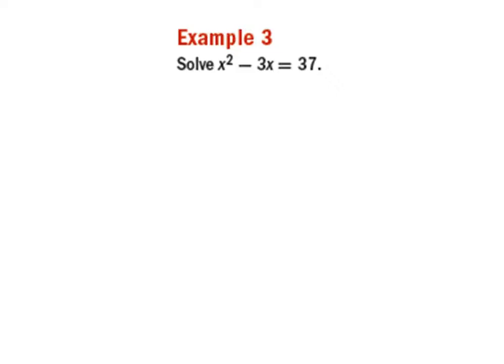Alright, and we have our last example, example 3 for this section 9-5, where we are going to solve x squared minus 3x equals 37. Once again, this is a quadratic equation, and we know that because it has an x squared, or a variable squared, along with a variable that is not squared.